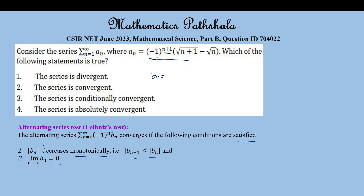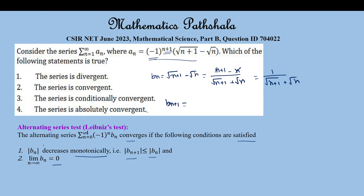Here b_n equals √(n+1) − √n. If I multiply denominator and numerator by √(n+1) + √n, we finally get b_n = 1 / (√(n+1) + √n). So b_{n+1} becomes 1 / (√(n+2) + √(n+1)).